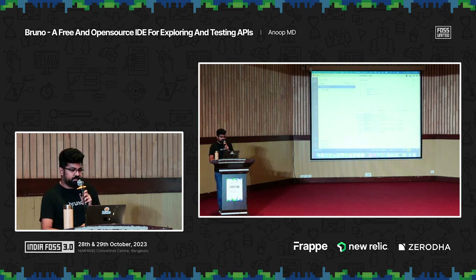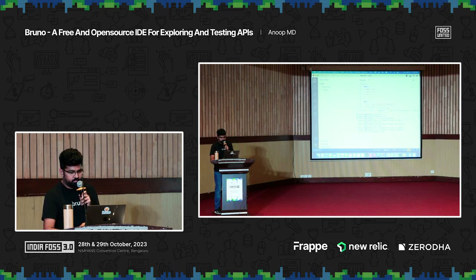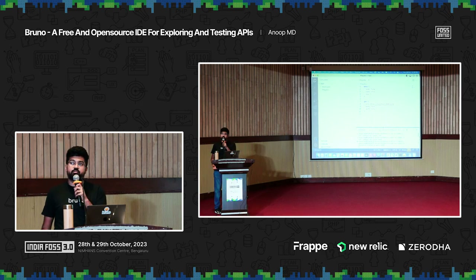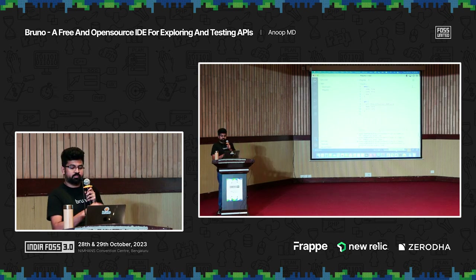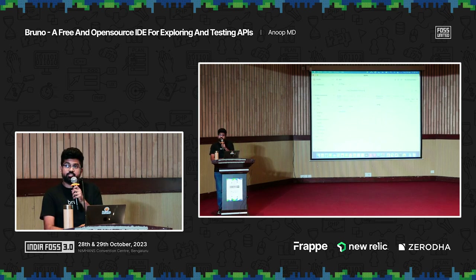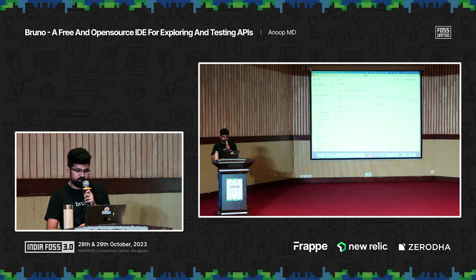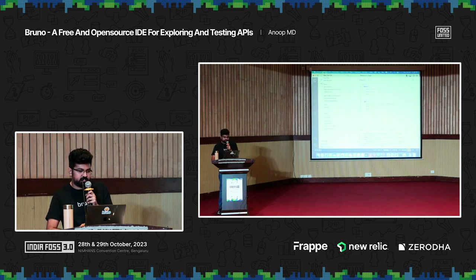Now if you look here, it created a file called a .bru file, which is called ping.bru. All the request details — your headers, authentication, scripts — everything resides in this file. This actually applies to folders too. If I look at this big collection, you have auth, bearer, and you can do bearer or basic authentication with scripts. All of this is mirrored as a set of folders and files.